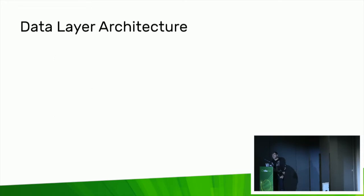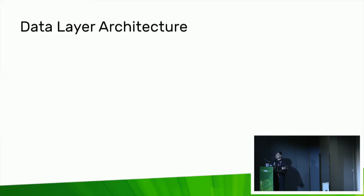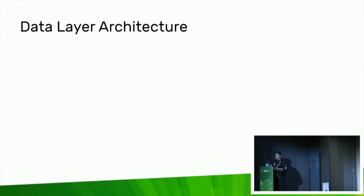But there is a third way — a phrase coined by David Simmons, our IoT evangelist — and that's this idea of a data layer architecture. The idea is that not only can you have collection and data processing at the edge, but you can also have collection and data processing in the cloud infrastructure, and the two can be complementary. Data would be collected at the edge, close to the sensor, close to the device that's producing it.